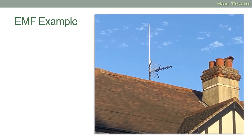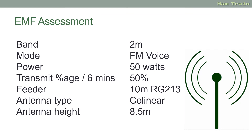Let's take a look at an example. Here you can see a picture of a standard collinear antenna on top of someone's roof. For this example, let's assume the amateur is using the 2-meter band with FM voice as the mode and 50 watts of power. They're transmitting 50% of the time, using RG213 feeder with a 10-meter run. The antenna is a 1-meter-tall collinear, and the height from the base of the antenna to the ground is 8.5 meters — just over a two-story building. All of this information is then fed into the RSGB calculator.